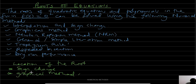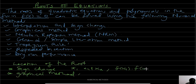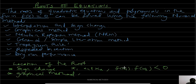How does sign change work? If the root lies between x1 and x2, then f(x1) times f(x2) should be less than 0. This means f(x1) can be positive and f(x2) is negative, or the reverse is true.